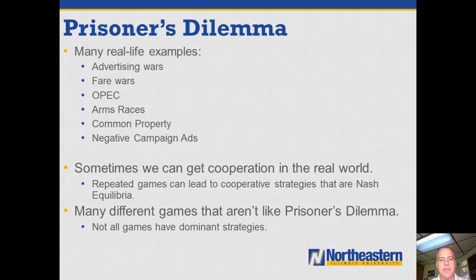Sometimes in the real world we can get cooperation, and one way we get cooperation in the prisoner's dilemma rather than the more destructive outcomes is because we play the games over and over and over again. If Bonnie and Clyde are planning on committing more crimes, there are ways for them to build up trust, and there are Nash Equilibrium outcomes in repeated versions of the game that will allow them to reach the cooperative outcome rather than the destructive outcome where they both rat each other out.